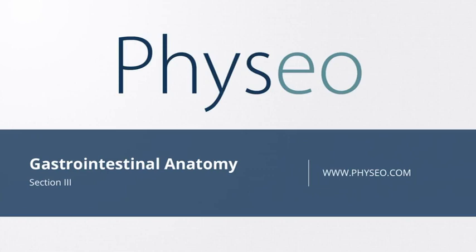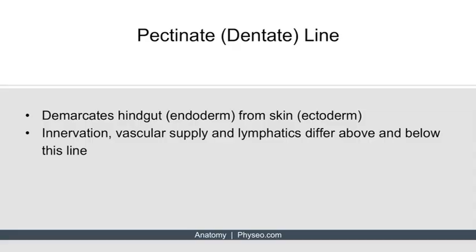Welcome to Section 3 in Gastrointestinal Anatomy. In this section, we will discuss the rectum and the pectinate line. Let's get started.